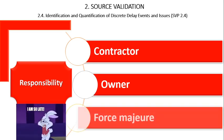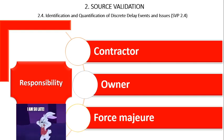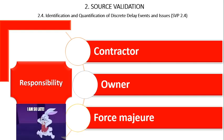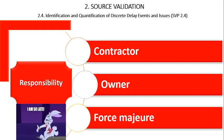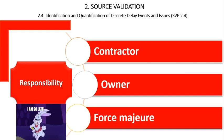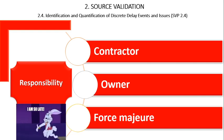Force majeure delay is any delay event caused by something or someone other than the owner, including its agents, or the contractor or its agents, or the risk of which has not been assigned solely to the owner or the contractor by contract language and/or local industry custom and practice. Examples of force majeure delays include, but are not limited to: delays caused by acts of God, inclement weather, acts of war, extraordinary economic disruptions, strikes, and other events not foreseeable at the time of contract. Many contracts specifically define force majeure events. Although strictly not a force majeure event, delays caused by parties external to the contract may also be classified under this category, if there are no contractual risk assignments to the contractor or the owner for such delays.